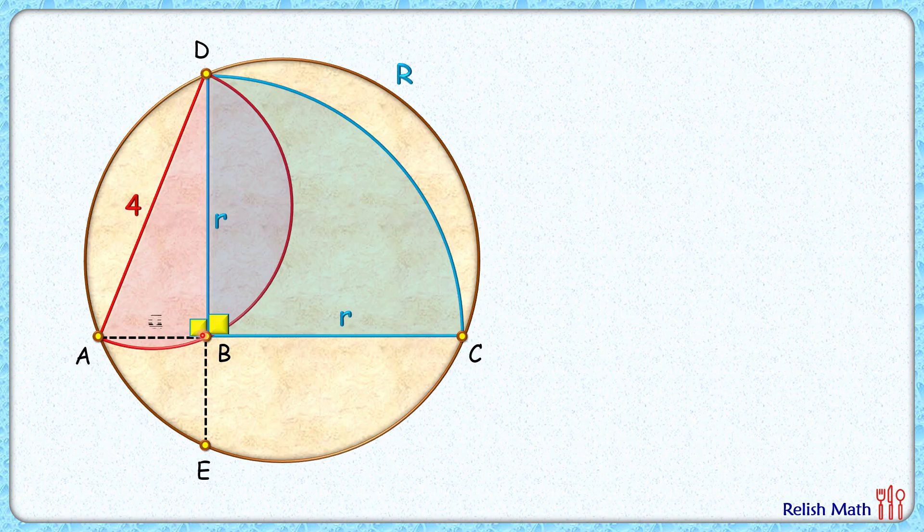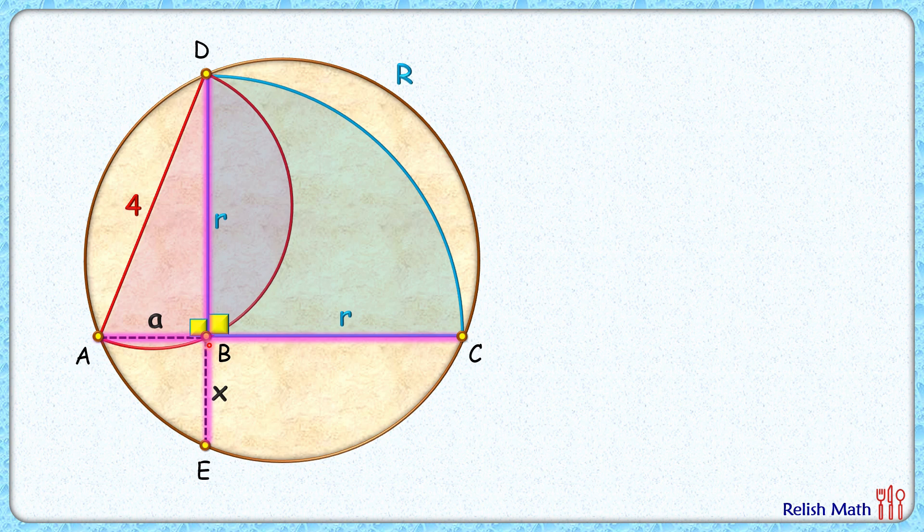Let's assume AB length is a centimeters and BE length is x centimeters. Now if you observe carefully, we have got two chords AC and DE intersecting at point B.